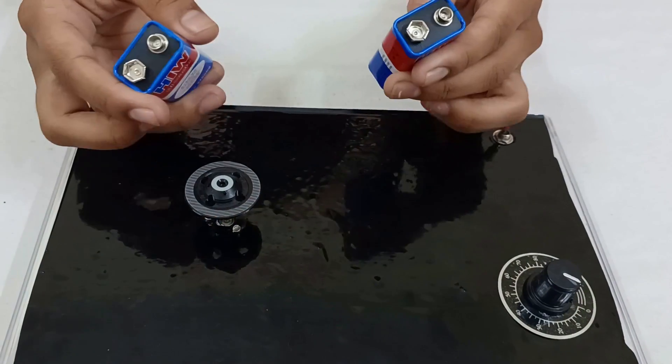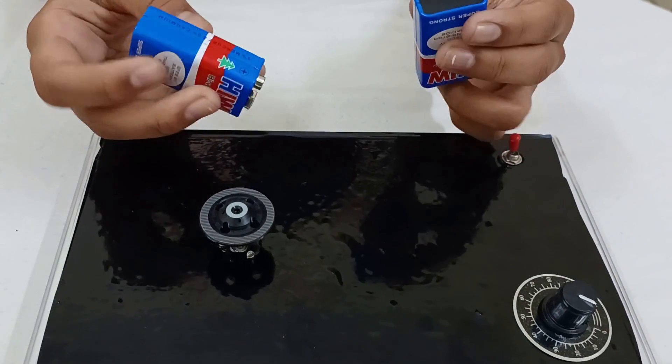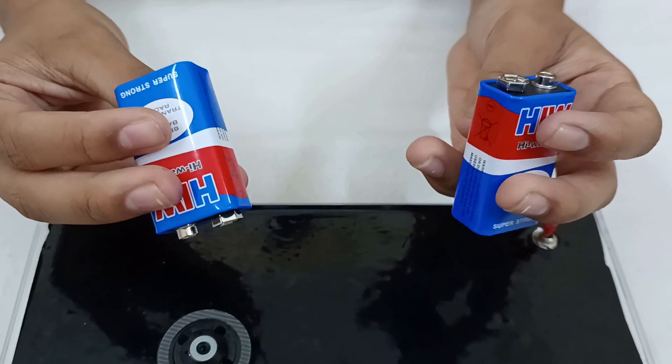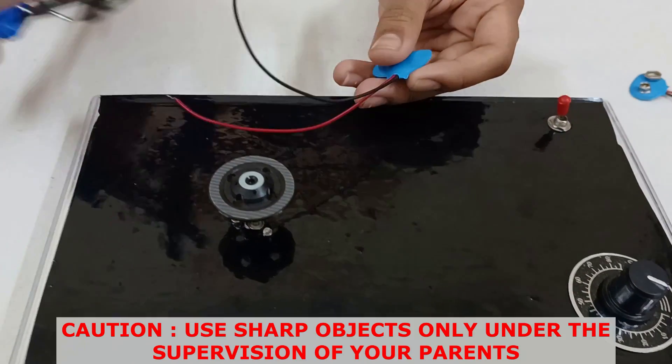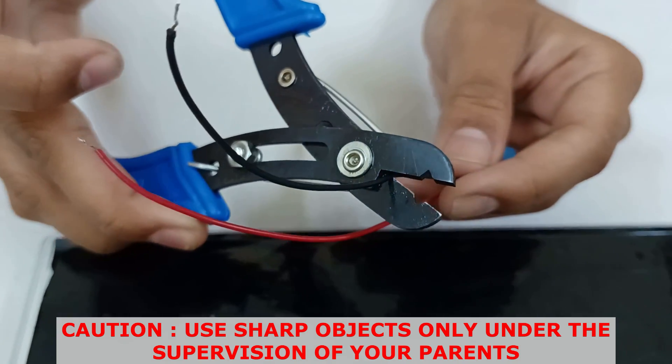We have two batteries, each one of 9V. But our project requires 18V, so we have to connect it in series. For that we already have two battery caps. We will cut the wire like this.